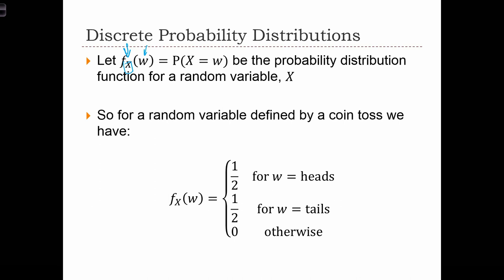For a random variable defined by a coin toss, the probability distribution function will equal one half when w is heads, it'll equal one half for w equals tails, and it equals 0 otherwise. Let's draw this out.